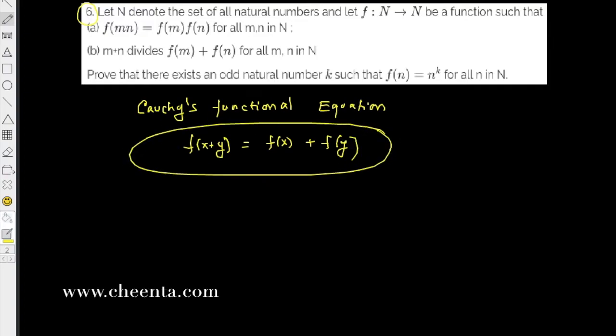We will use this to solve this problem. Let's look at the problem statement. It's very simple: we have a function with domain and co-domain as natural numbers.